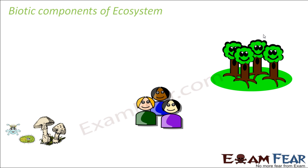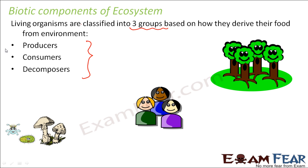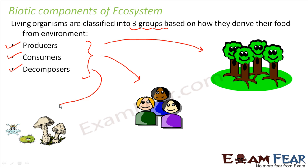Now we will talk about the biotic components of ecosystem in a little more detail. The living organisms are classified into three groups based on how they derive their food from the environment. These three groups are producers, consumers, and decomposers.